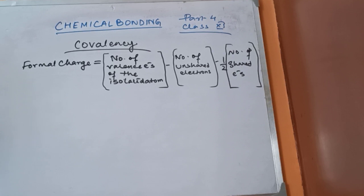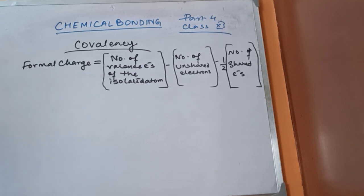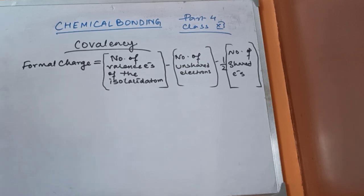This is the formula for formal charge: number of valence electrons of the isolated atom, minus number of unshared electrons, minus half into number of shared electrons. Remember, you have to study the Lewis structures of all the compounds given in your book. Those are the common compounds whose formal charge can be calculated.